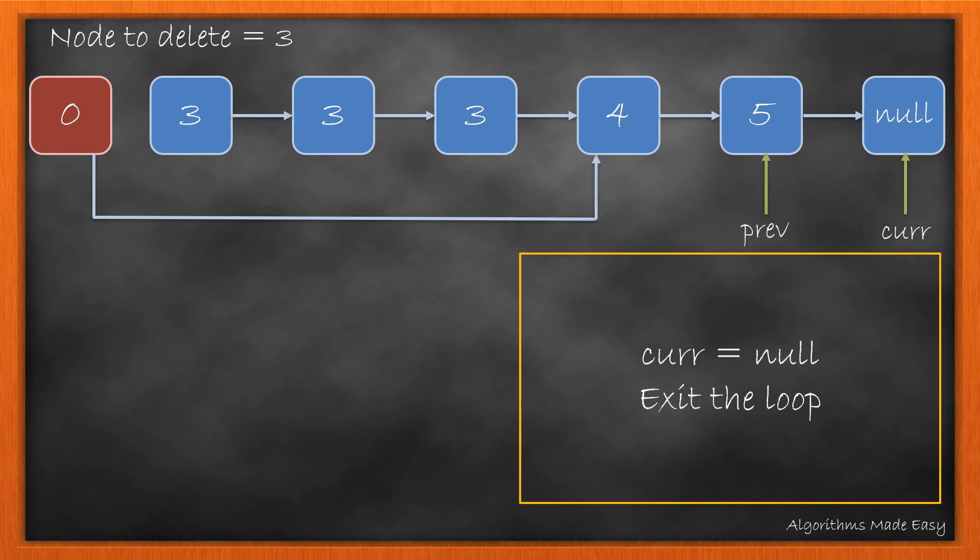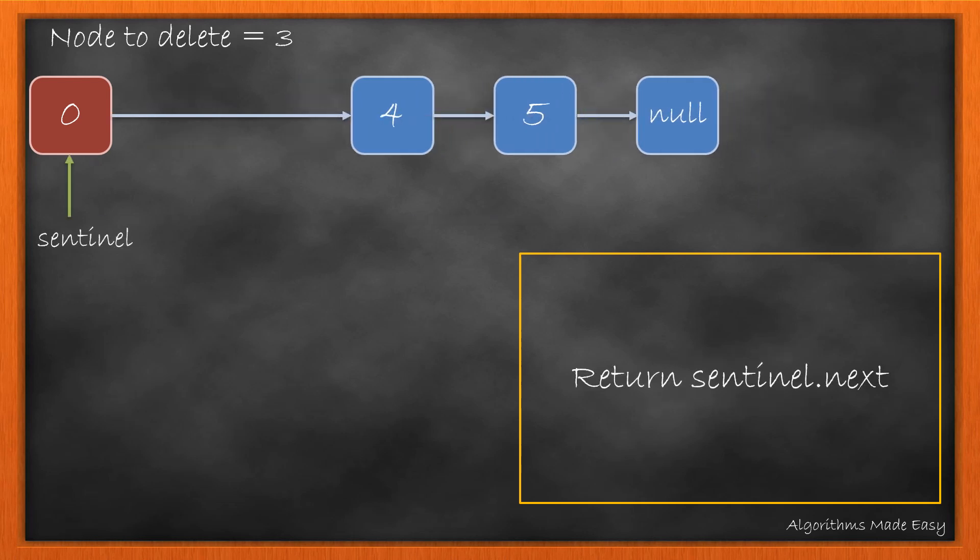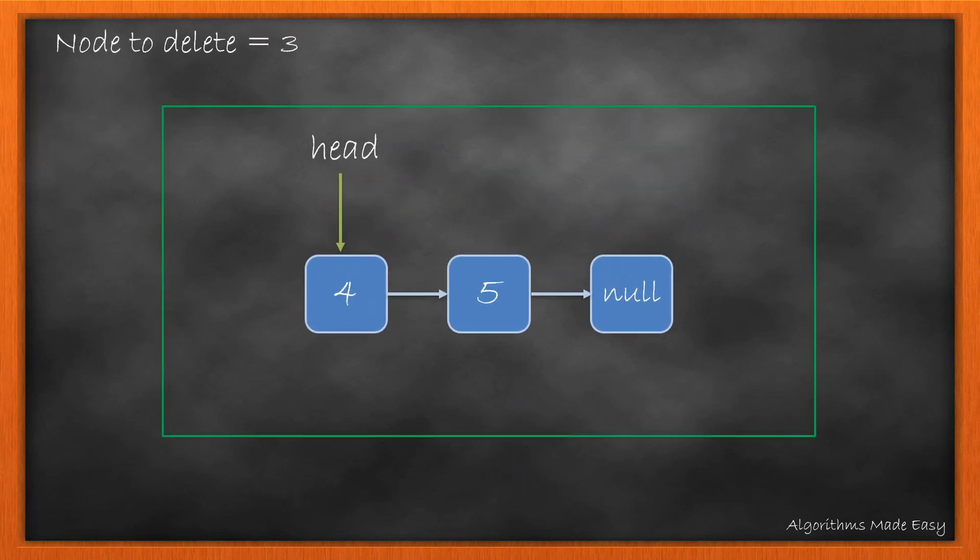Now that the current node becomes null, the loop breaks and we have this linked list remaining with us. As we need to get rid of the dummy node or the sentinel node, we return the next of sentinel as the head of our output linked list. So, this becomes our final output.